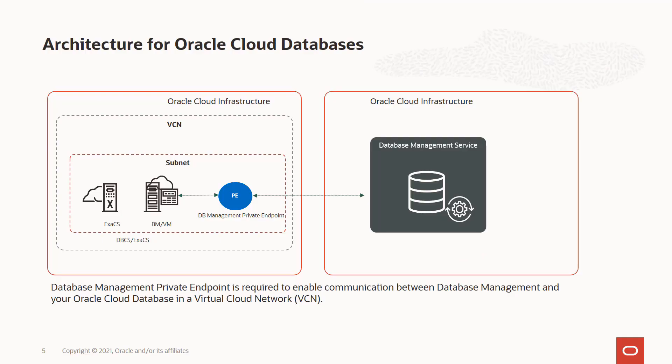Here is a quick architecture of how the Database Management Service would interact with Oracle Cloud Databases. On the left-hand side, you would see Oracle Cloud Infrastructure within the VCN and a subnet — the customer VCN and customer subnet — where you have Exadata, bare metal, and virtual machine systems deployed. You would have a concept called a private endpoint, which represents database management in the VCN accessed via a virtual network interface card or VNIC with a private IP address in a subnet of your choice. Database Management Service resides in a separate tenancy and accesses databases in the customer tenancy via the private endpoint.